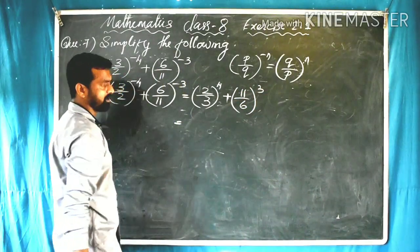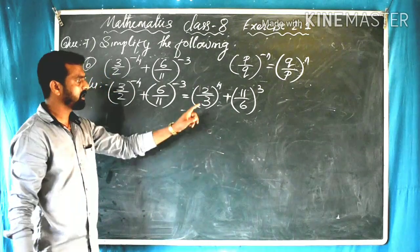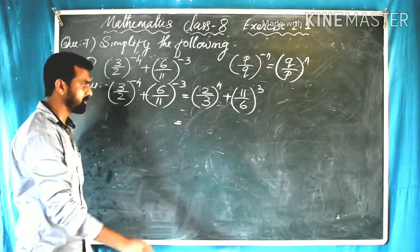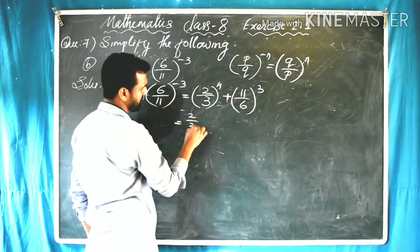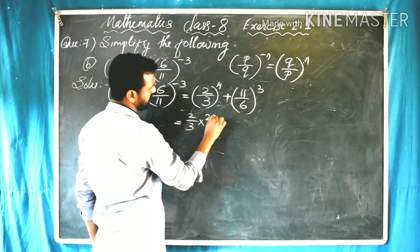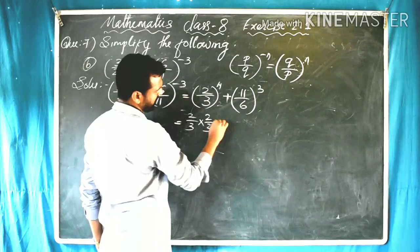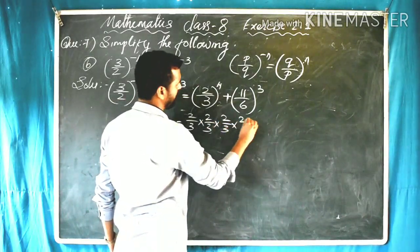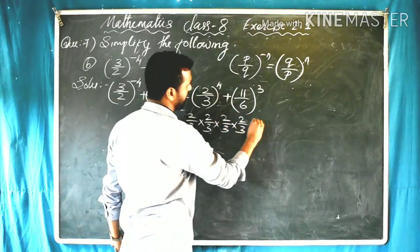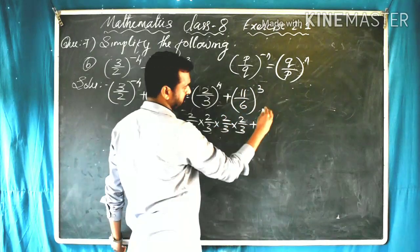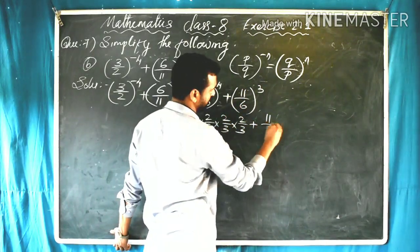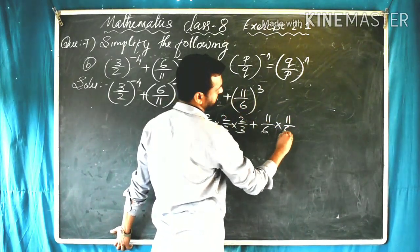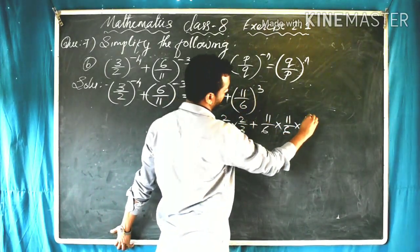Now we simplify: 2 by 3 raised to 4 means 2 by 3 multiplied 4 times — that is 2/3 × 2/3 × 2/3 × 2/3. Plus 11 by 6 raised to 3, which is 11/6 × 11/6 × 11/6, meaning 11 by 6 is multiplied 3 times.